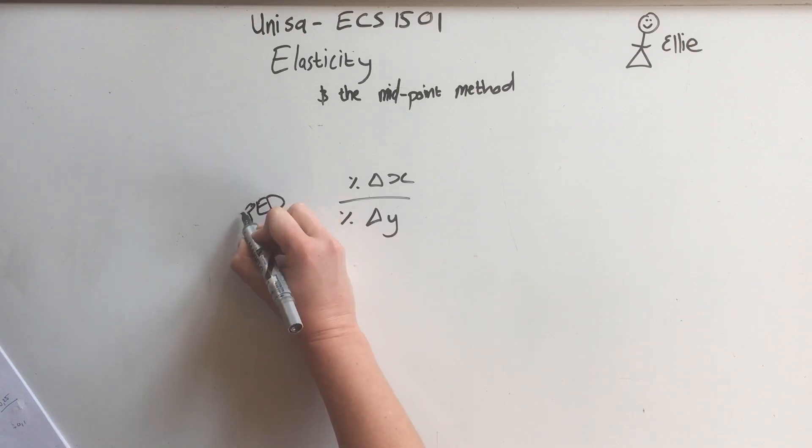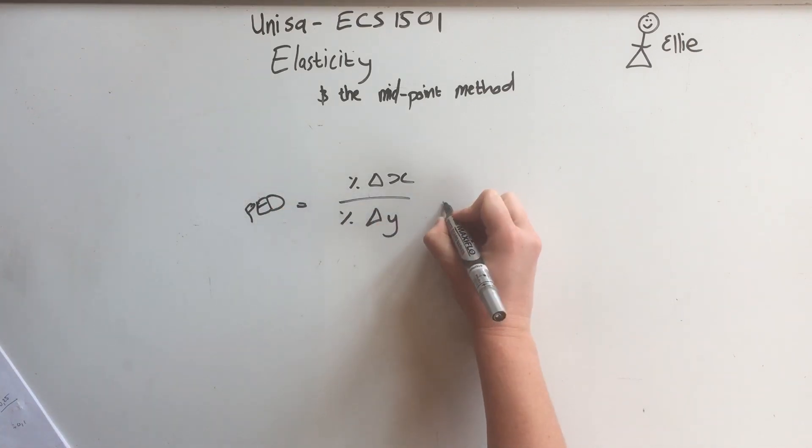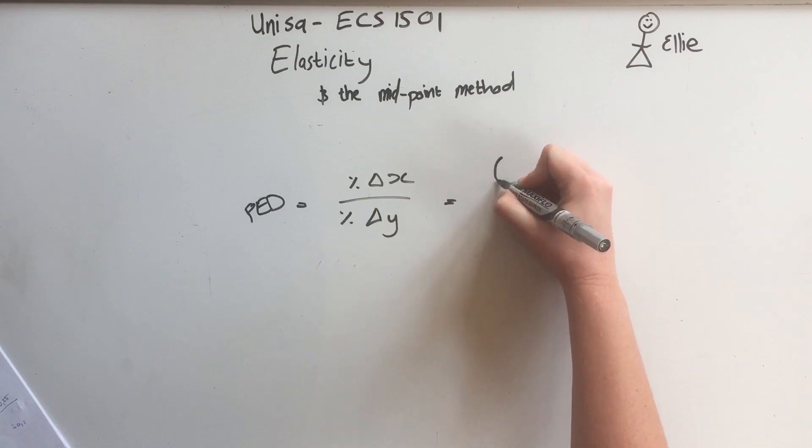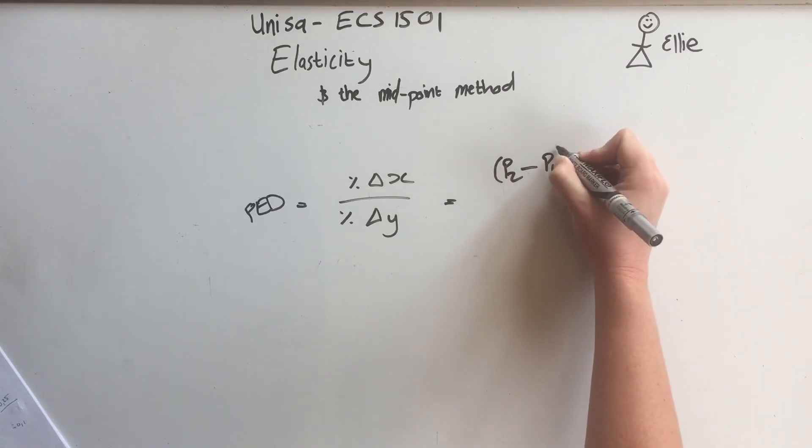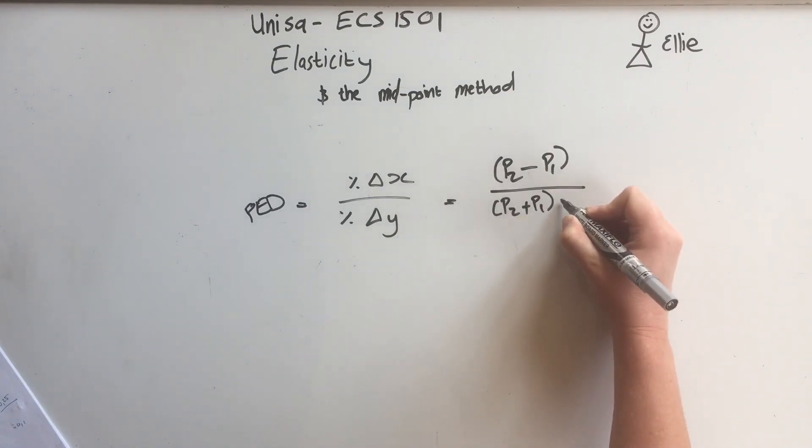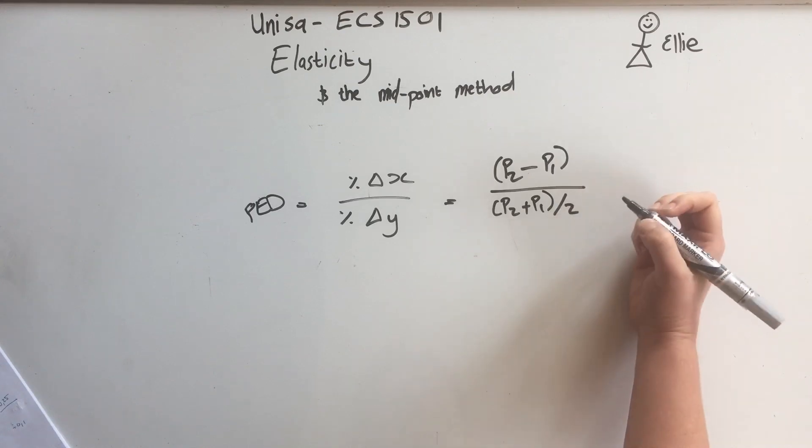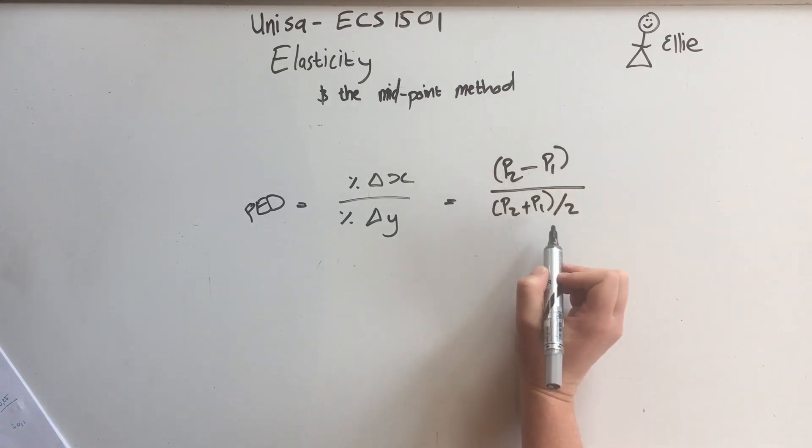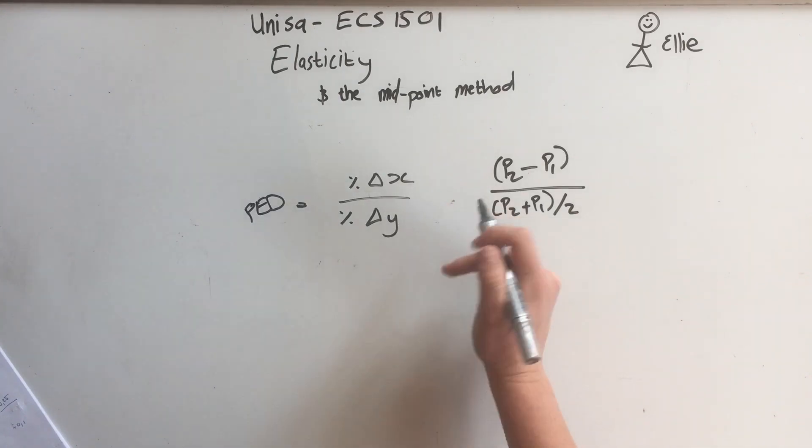But now the midpoint method says you take the new price minus the old price over both prices plus together divided by two. So this formula changes. For example, the change in X would be that, and then the change in Y is exactly the same thing.